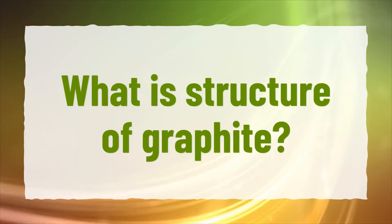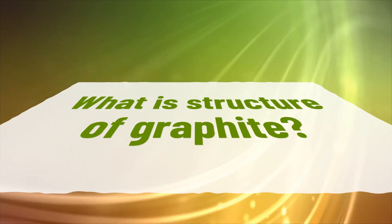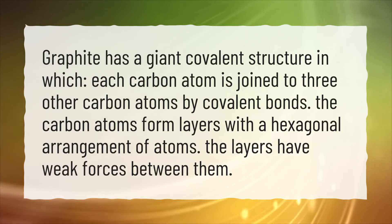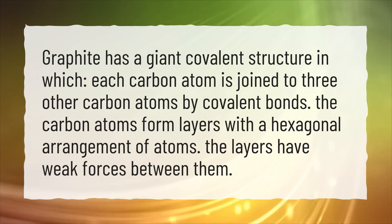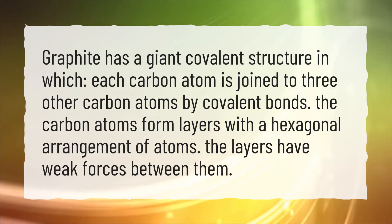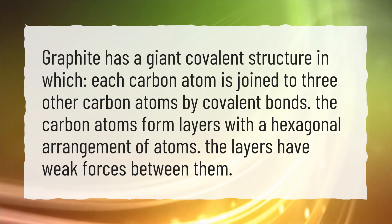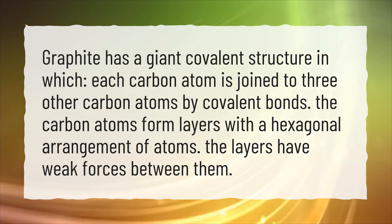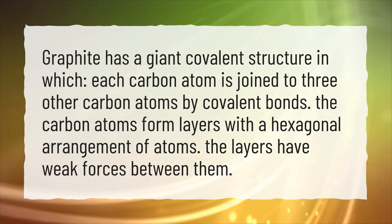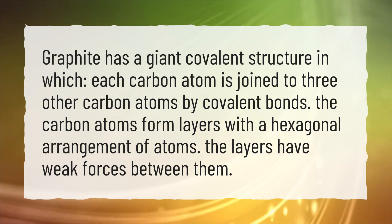What is the structure of graphite? Graphite has a giant covalent structure in which each carbon atom is joined to three other carbon atoms by covalent bonds. The carbon atoms form layers with a hexagonal arrangement of atoms, and the layers have weak forces between them.